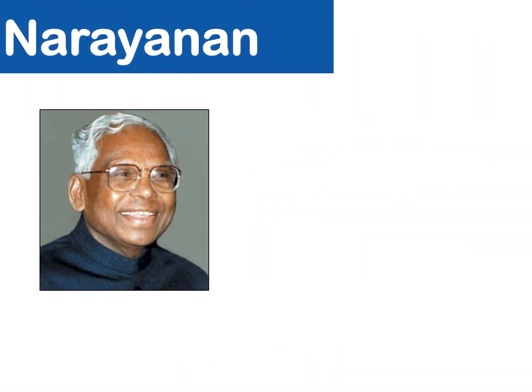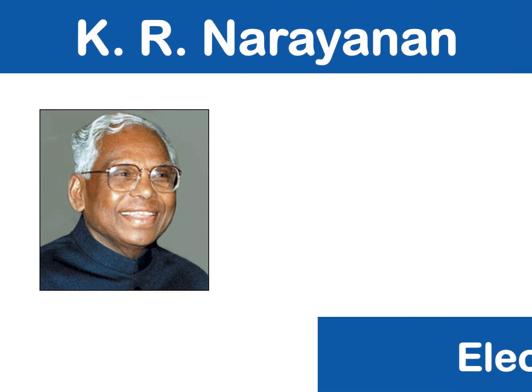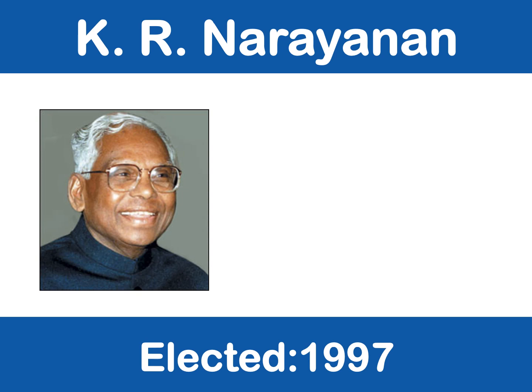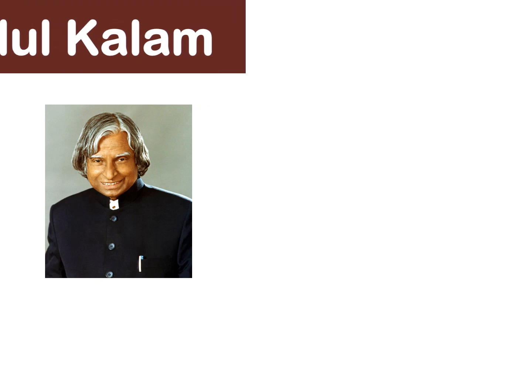The next president was K.R. Narayanan. He was elected in 1997 and served a term of five years from 1997 to 2002. He was the first Dalit president of India. He was an independent candidate with no affiliation to any political party.